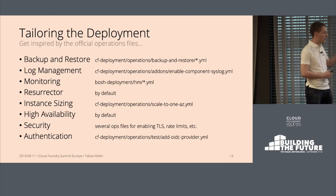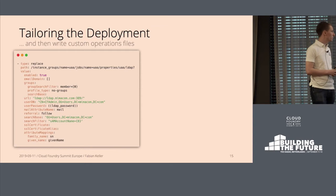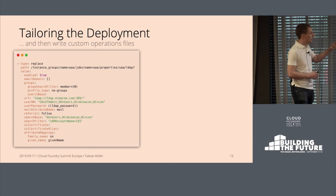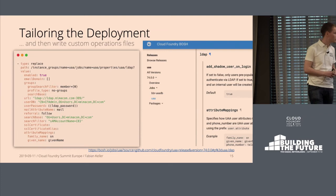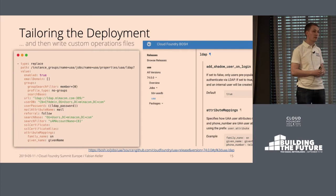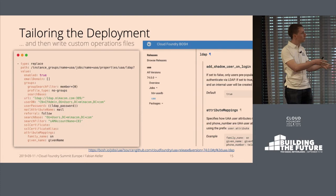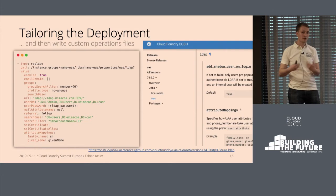That's a great starting point, but we still had to tailor some things. We started writing our own operations files — for example, we wrote one for LDAP integration. When you start writing ops files, the team needs to know what to write and understand what's happening. On bosh.io you can go to the releases tab, choose your release, and go into the documentation — for all the properties, there's typically at least one sentence describing what it does. The team had to learn to go there, skim the documentation, and decide whether they needed a particular property.